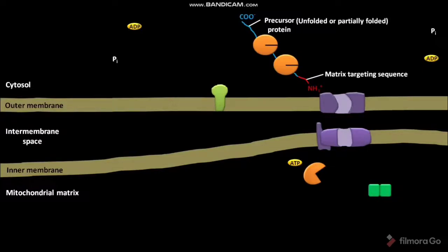The bound hsc70 protein maintains the precursor protein in an unfolded or partially folded state. Generally, only unfolded proteins can be imported into the mitochondrion, so maintenance of a nascent protein in an unfolded or partially folded state is mandatory.